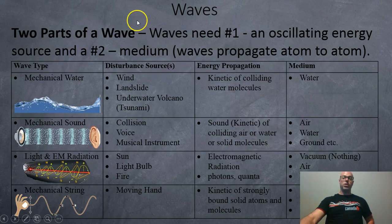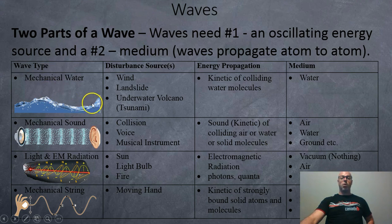So there are different kinds of waves. We've got mechanical water waves, which is caused by an oscillating source such as wind, landslide, or an underwater volcano, which may actually cause a tsunami. It's the kinetic energy of colliding water molecules that keep running into each other and moving and propagating the energy through. And the main medium, of course, being water.